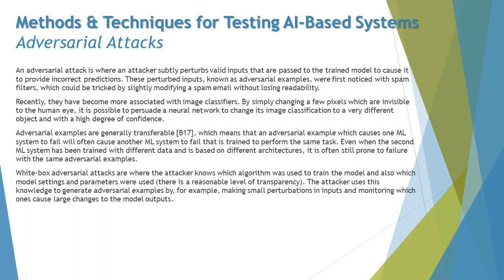Adversarial examples are generally transferable, meaning an adversarial example that causes one ML system to fail will often cause another ML system to fail — even when the second ML system was trained with different data and based on different architectures. Because of how ML model workflows connect input and output nodes, if one model fails, other connected models also tend to fail in a chain reaction, producing totally different outputs than expected.